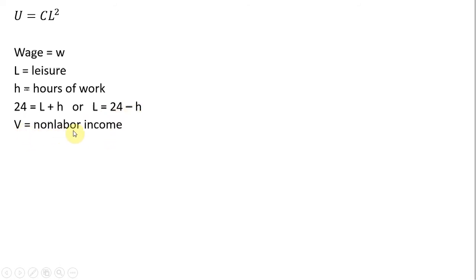V represents non-labor income. C is consumption spending. So the consumer's consumption spending will equal their labor market income, the wage times hours of work, plus their non-labor income, V.